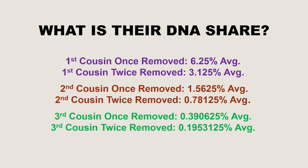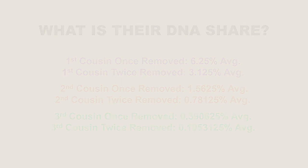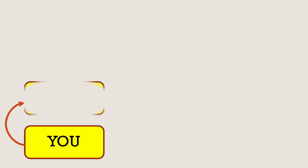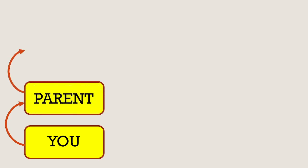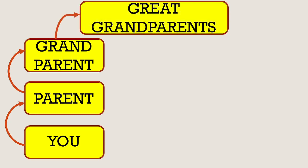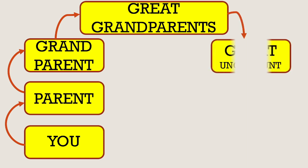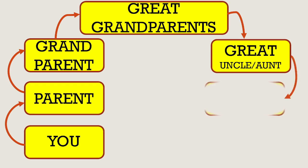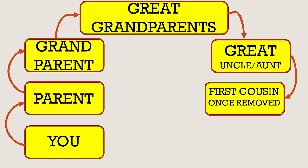It's all well and good showing you these numbers, but how are you actually related? Let's start with a chart. We'll start with you, head up to your parents, and above your parents are your grandparents. The parents of your grandparents are your great-grandparents. If we drop down the generations we have a great uncle or aunt, which is your grandparent's sibling. Then we go down one more and we arrive at the first cousin once removed — your closest removed cousin.